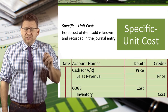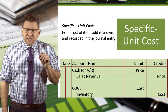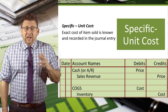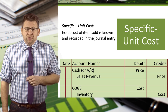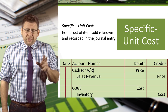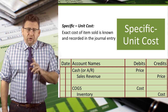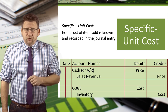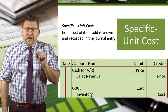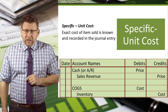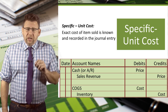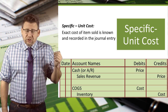This method uses the specific cost of each unit of inventory to determine cost of goods sold and the value of the remaining items in inventory. One of the things we will see over and over with the topic of inventory evaluation is that we need to know the cost of inventory so we can record the sale of goods journal entry, as shown here.